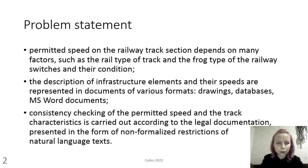Permitted speed on the railway track section depends on many factors, such as the type of track, the frog type of the railway switches, and their condition. The description of infrastructure elements and their speeds are represented in documents of various formats: drawings, databases, and Microsoft Word documents. Consistency checking of the permitted speed and the track characteristics is carried out according to legal documentation presented in the form of non-formalized restrictions of natural language texts.